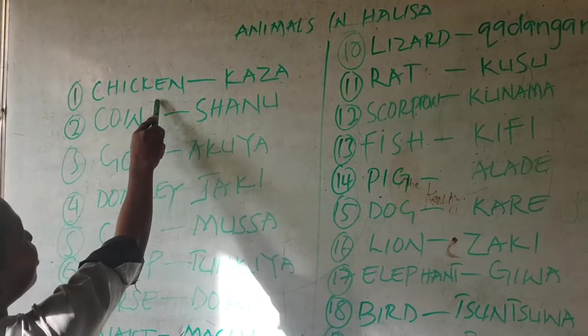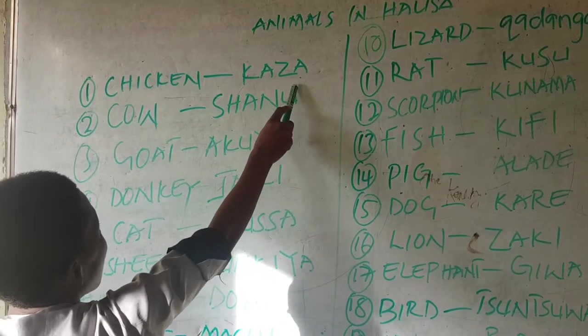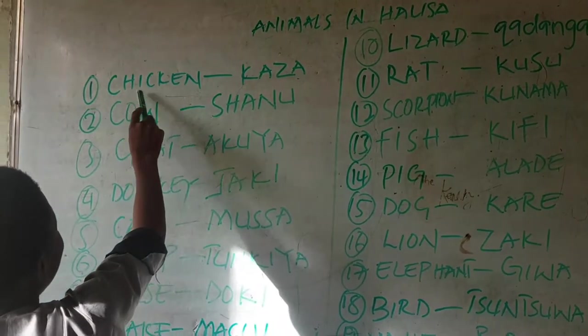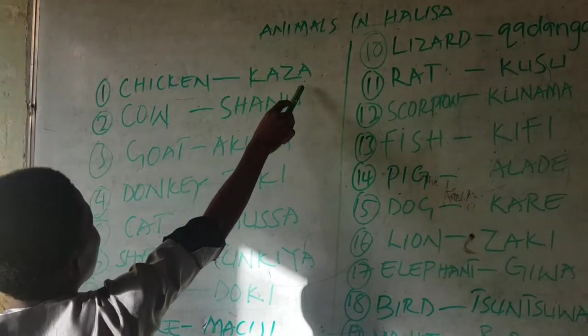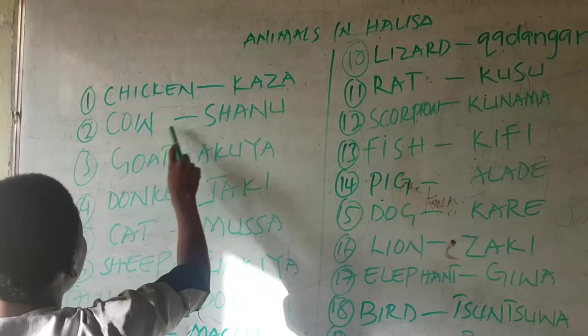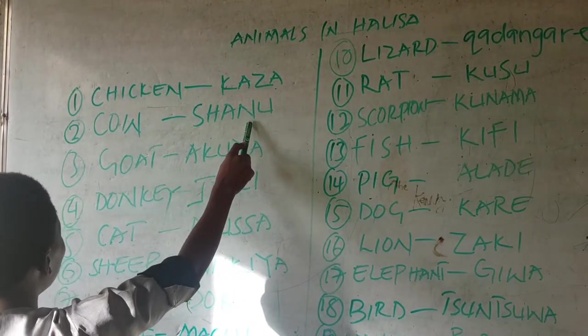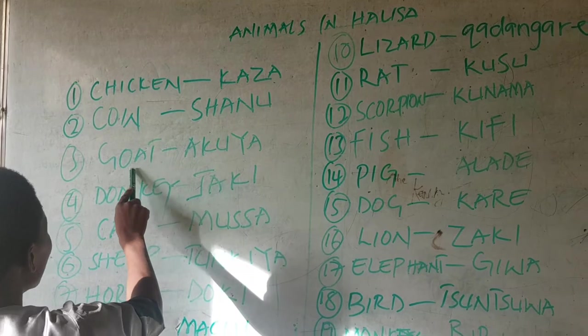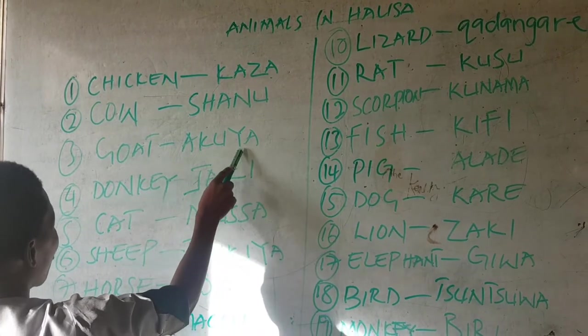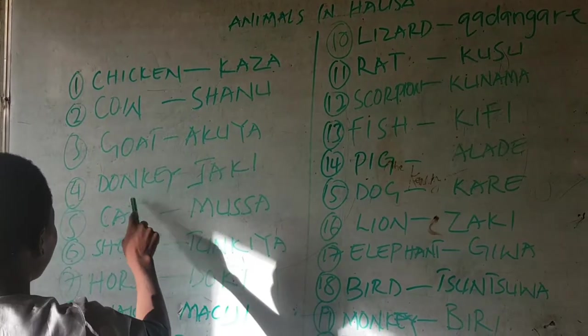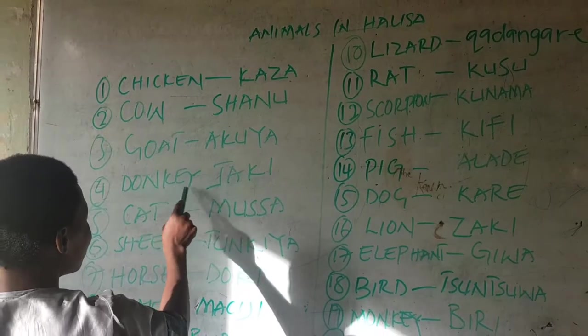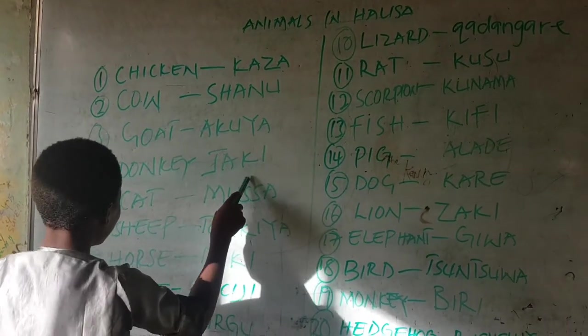Chicken, kaza. Cow, shanu. Goat, aquya. Donkey, jaki.